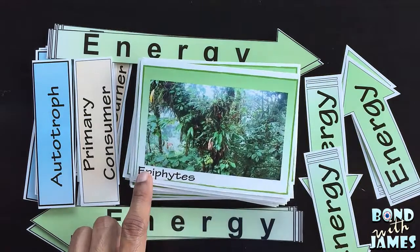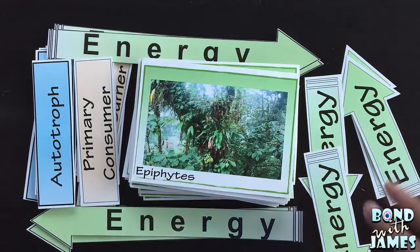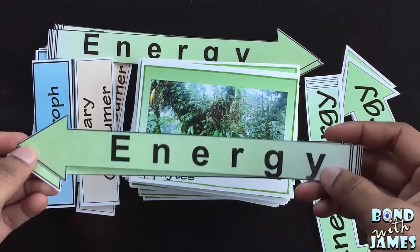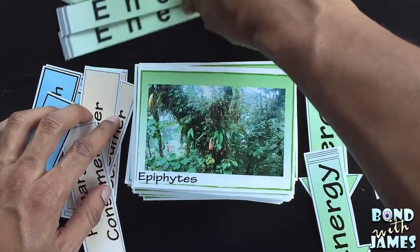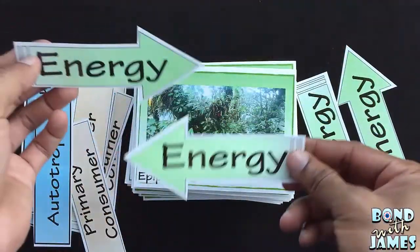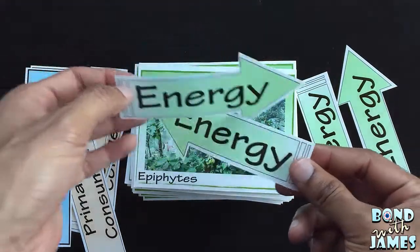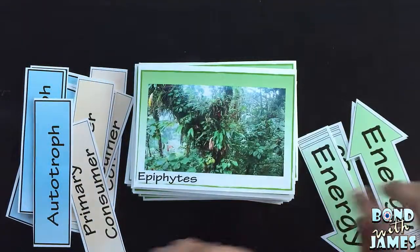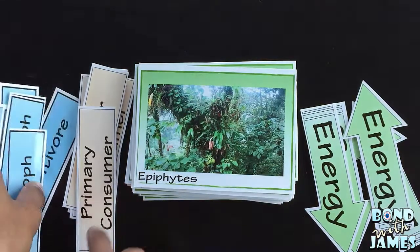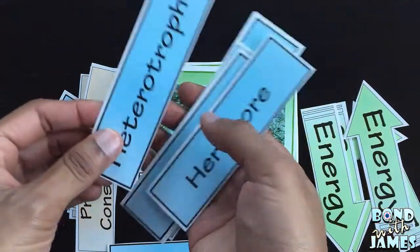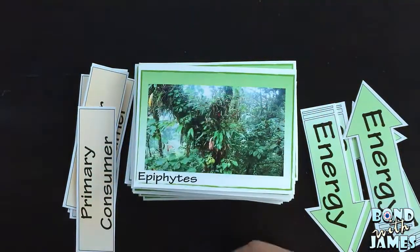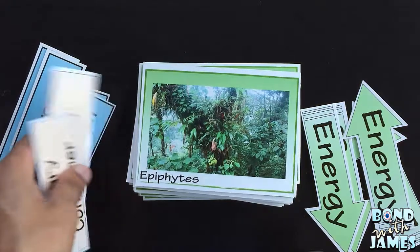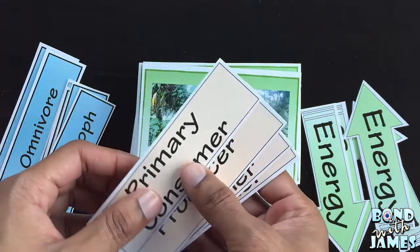If you notice, there is the organism name — the border will just depend on whatever set you are utilizing. There are energy arrows; I have the large versions going in both directions, as well as smaller versions of the energy arrows going in opposite directions. There are also some vocabulary terms: autotrophs, heterotrophs, and the different types of heterotrophs in terms of how organisms attain their energy, and then the different levels as you go up the energy pyramid.